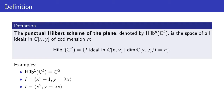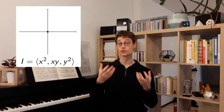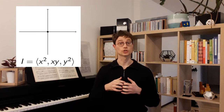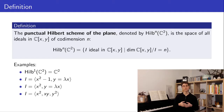Consider the ideal generated by x², xy, and y². Geometrically, what you see is just the origin, but when you take the quotient, you get a vector space of dimension 3, because you have a basis given by 1, x, and y. So this is an example of an ideal in the three-point Hilbert scheme.